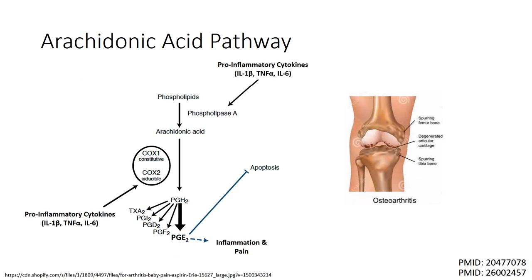In the presence of pro-inflammatory cytokines such as interleukin-1-beta, tumor necrosis factor alpha, and interleukin-6, cellular enzyme levels of phospholipase A, as well as an inducible form of cyclooxygenase known as cyclooxygenase 2, become greatly elevated. This results in the production of prostaglandins that are inflammatory and sustain inflammation and pain.